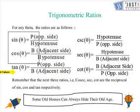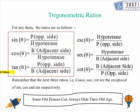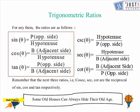So it means we just need to learn these three predefined ratios to solve the problems, but it is really very important to learn even these three. We have a little hint here to help us out. This line says: some old houses can always hide their old ages. The letters of each word help us remember these ratios. SOH tells us sine theta equals opposite side upon hypotenuse. CAH tells us cos theta equals adjacent side upon hypotenuse. TOA tells us tan theta equals opposite side upon adjacent side.